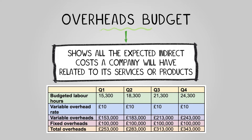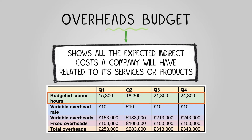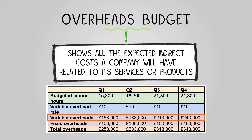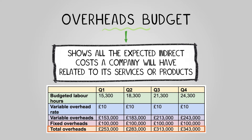it therefore won't include any direct labor or material costs. Here's what you'll find in an overheads budget: budgeted labor hours — the time needed for production; variable overhead rate — the cost per hour of variable overheads; variable overheads — calculated by multiplying the budgeted labor hours by the variable overhead rate; fixed overheads — the total cost of the fixed overheads; and total manufacturing overhead — calculated by adding the variable overheads to the fixed overheads.